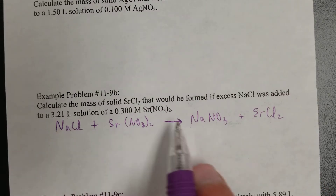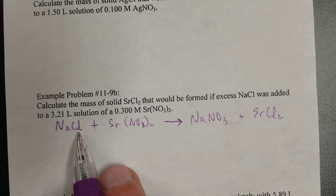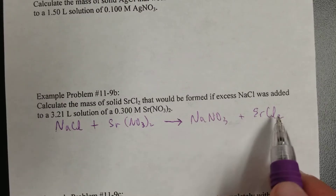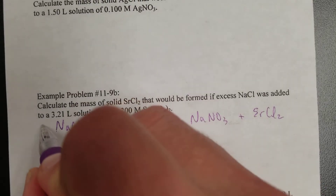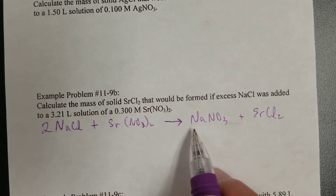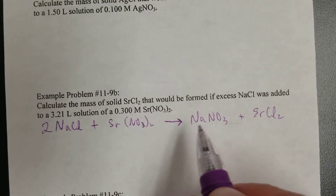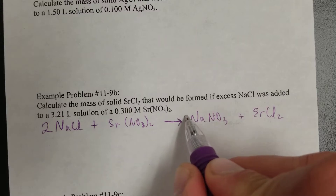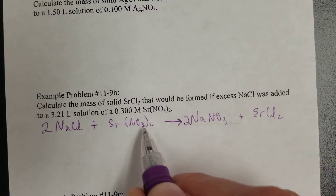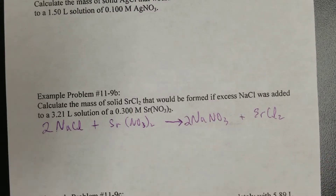Now we need to balance it. One sodium, one sodium — but one chlorine versus two chlorines, so put a 2 there and two sodiums on the left. Then we need to put a 2 there for the two nitrates. That takes care of that. Having done that, the next item of business is to come up with the actual calculations.